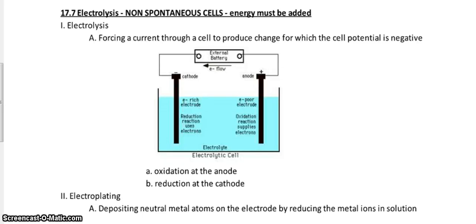Hey AP Chemsters, this is the last section on this Chapter 17 series here, and this is all about electrolysis. What you need to know about electrolysis is that these are non-spontaneous cells, so energy must be added to make these reactions go. Energy is typically from your outlet or from a battery. Electrolysis is forcing a current through a cell to produce a change in which the cell potential is negative.